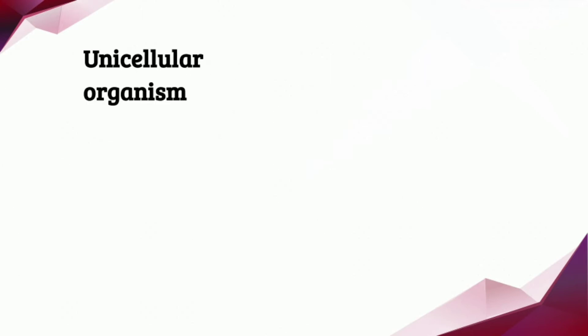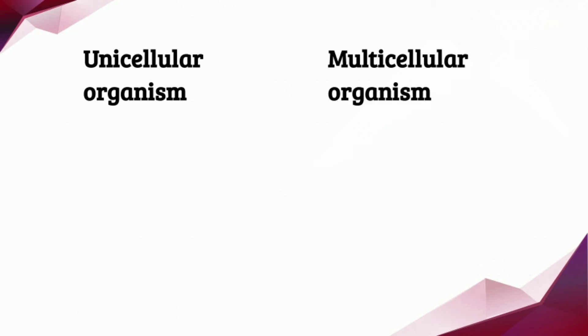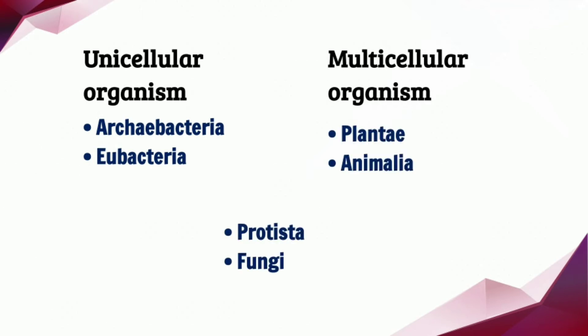The next aspect we are going to look at is unicellular organisms and also multicellular organisms. Archaebacteria and eubacteria are unicellular organisms. Plantae and Animalia are multicellular organisms. Protista and fungi can either be unicellular or multicellular organisms.